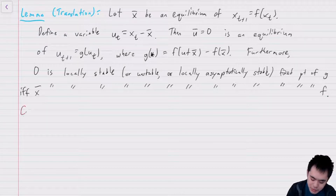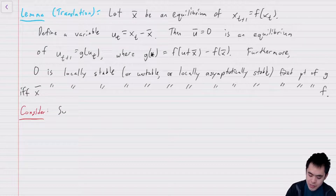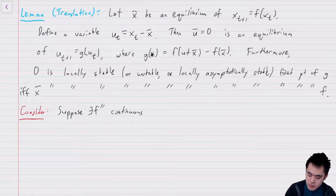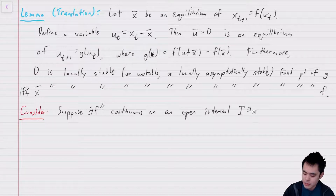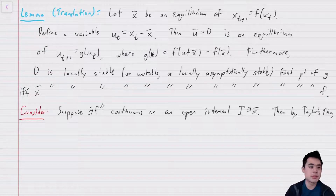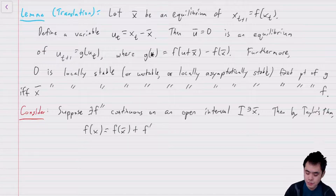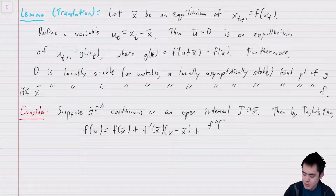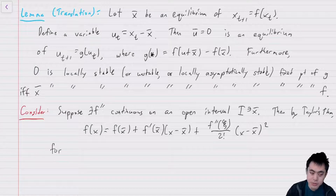We're going to do the same thing in this case. Suppose that we have f double prime continuous on an open interval I which contains x-bar. Then by Taylor's theorem, we know that f(x) = f(x-bar) + f'(x-bar)(x - x-bar) + f''(ξ)/2 · (x - x-bar)², which is the remainder term, for some ξ in I.